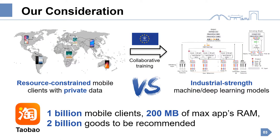In this work, we consider how to enable resource-constrained mobile clients to train industrial-strength deep learning models while keeping user data private. We take the largest online shopping platform in China, Taobao, for example. There are 1 billion mobile clients, the maximum size of the app is 200 megabytes, and there are 2 billion goods to be recommended.